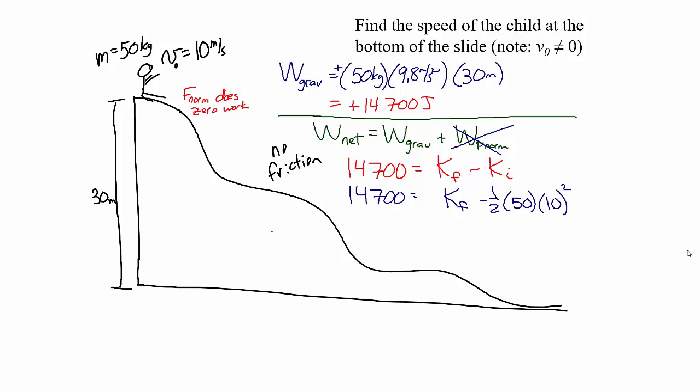The initial kinetic energy is one half times 50 kilograms times 10 meters per second squared, which is 2,500 joules. So we started with 2,500 joules, and gravity added 14,700 joules to that kinetic energy. The final kinetic energy is therefore 17,200 joules. The work done is the way we add energy to or take energy from an object — it had 2,500 joules, we added 14,700 joules, so now we have 17,200 joules of kinetic energy.